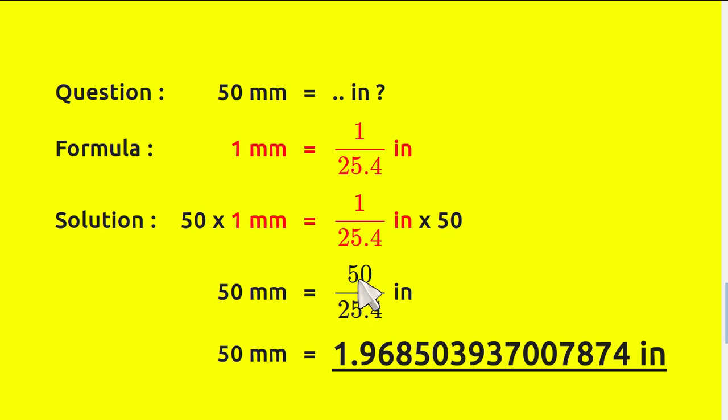So, we have 50 here. Okay, 50 times 1 equals 50 divided by 25.4 inch. And it equals 1.968, etc. And that's all of it.